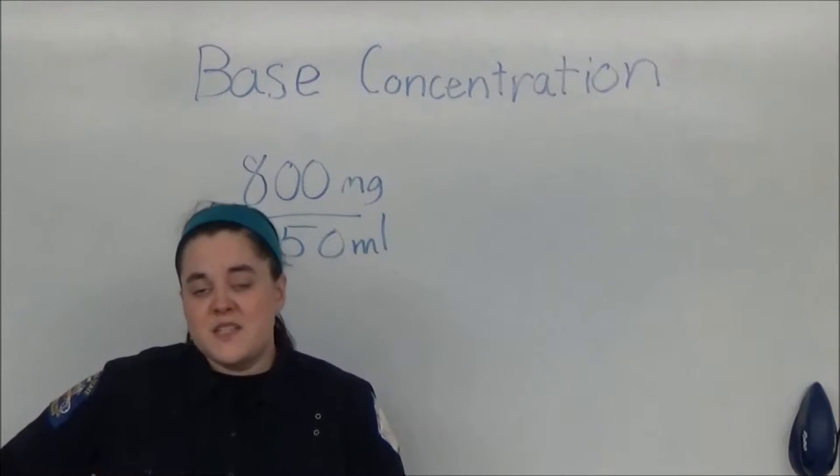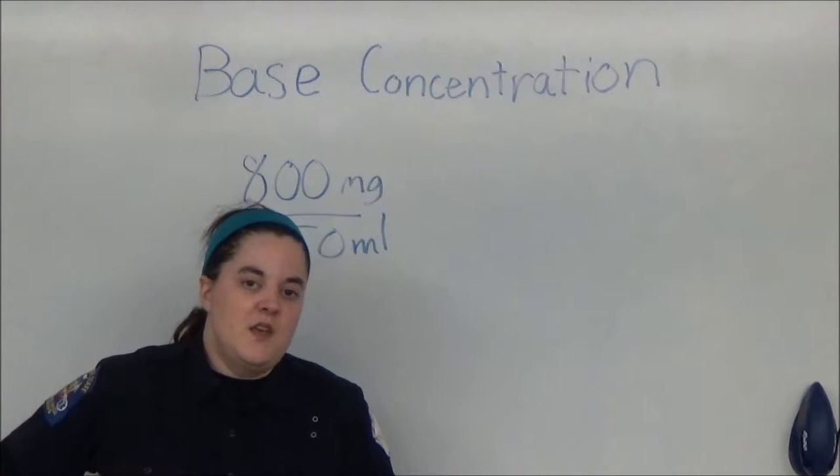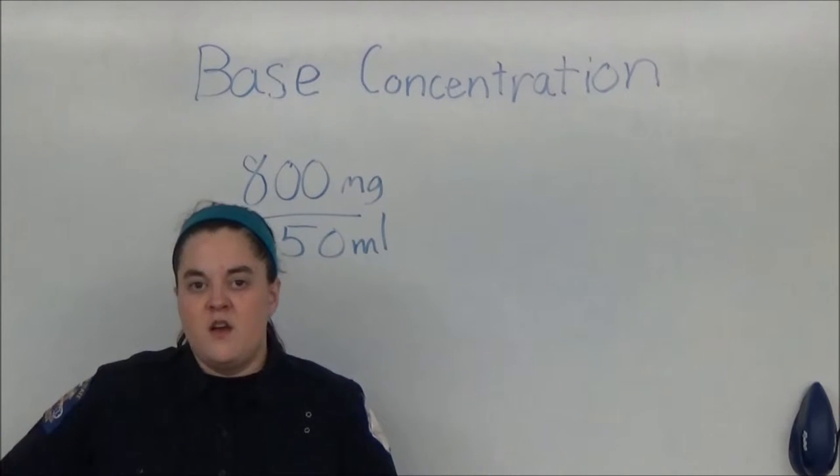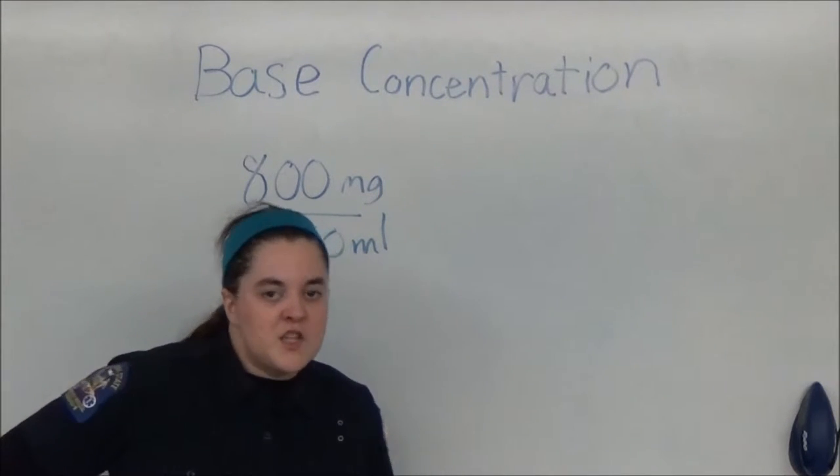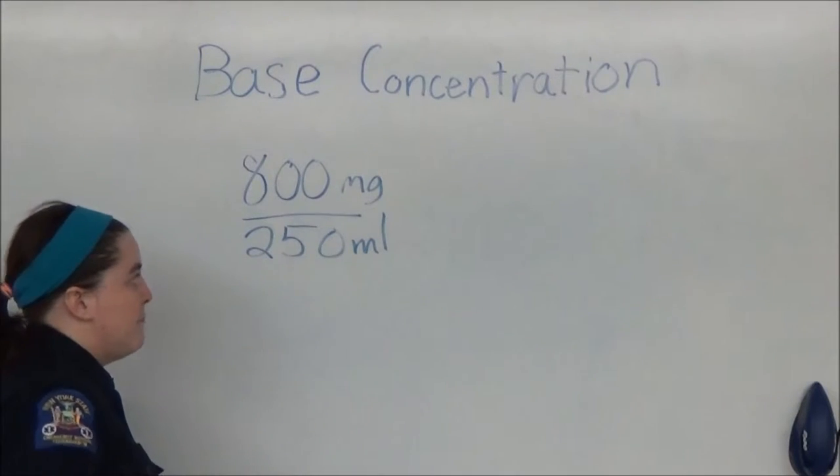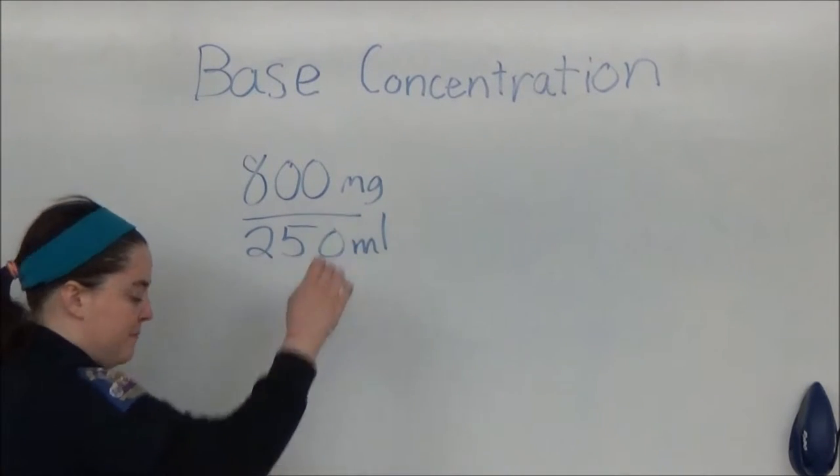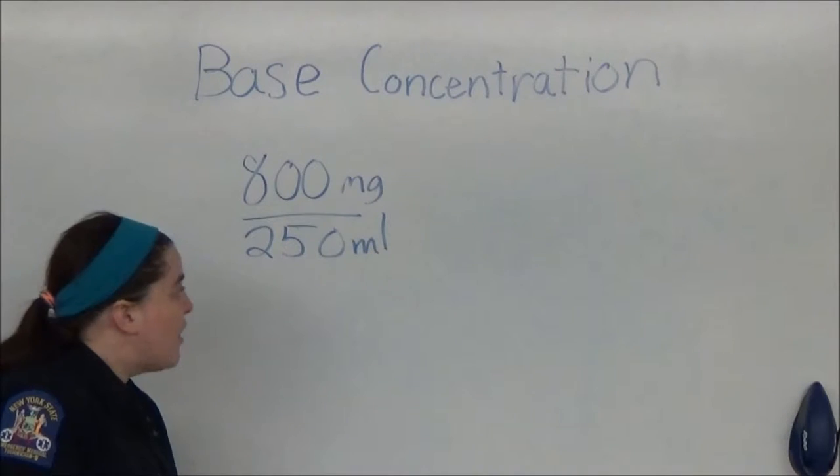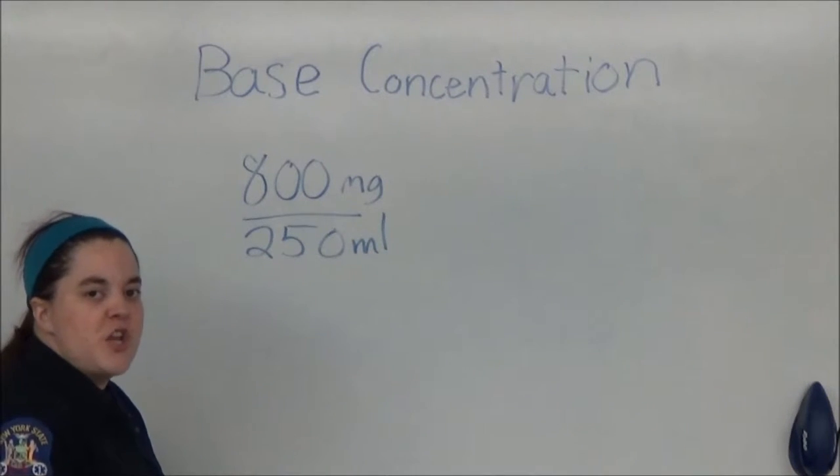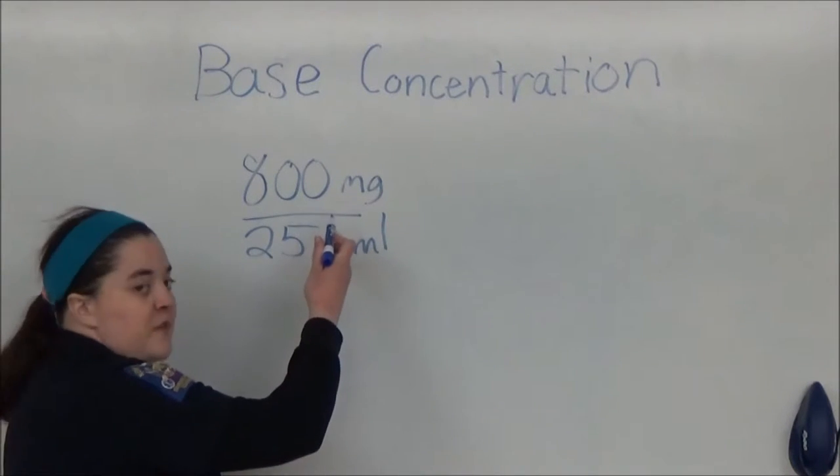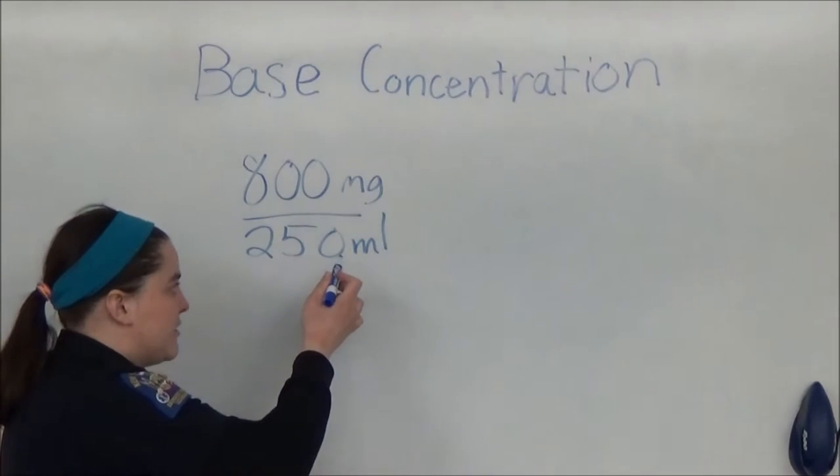The base concentration is the amount of milligrams in one milliliter of liquid volume and it's always represented as milligrams per milliliter. So how do you find the base concentration of 850 milligrams in 250 milliliters?